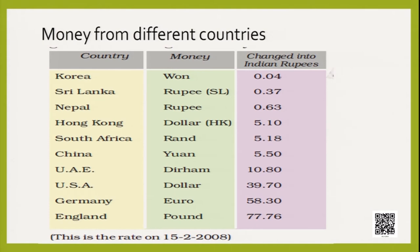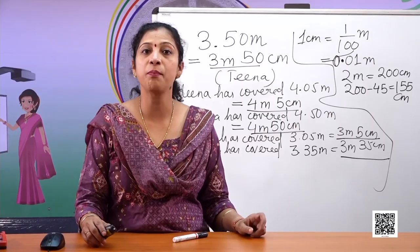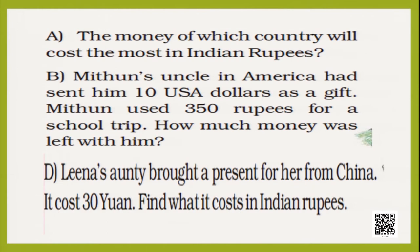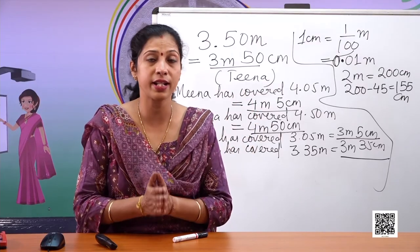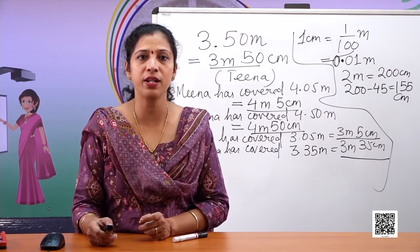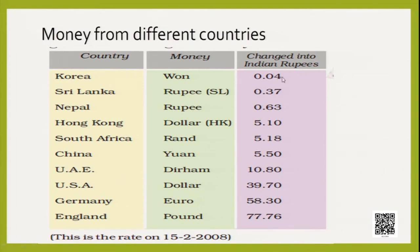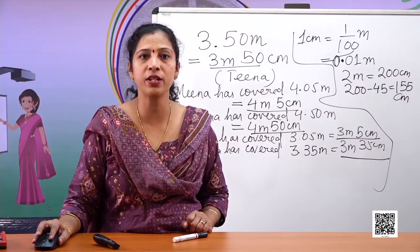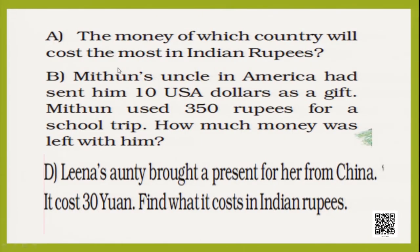The question is: money of which country will cost the most in Indian rupees? Looking at the exchange rate chart, you can see the maximum value is for the British pound — 1 pound gives you 77 rupees 76 paise. So the money of England will cost the most in Indian rupees.